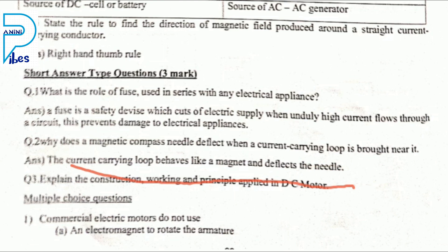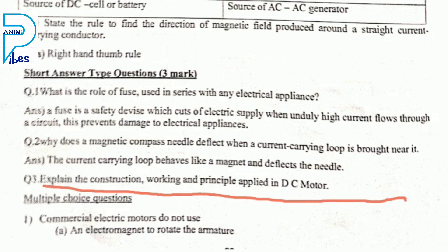The first activity we observed: when current is passing, deflection is observed — this is the Oersted experiment performed here. Explain the construction, working, and principle applied in DC motor. Fleming's right hand rule is applied in the electric generator. DC is the unidirectional current and DC cannot be transmitted over long distances. For working and construction, refer page numbers 19 and 21.